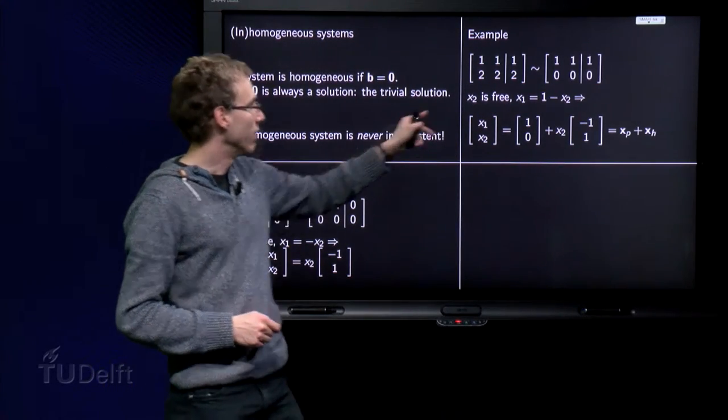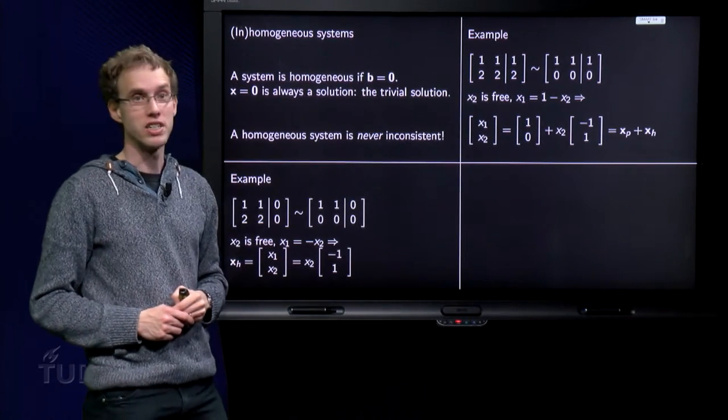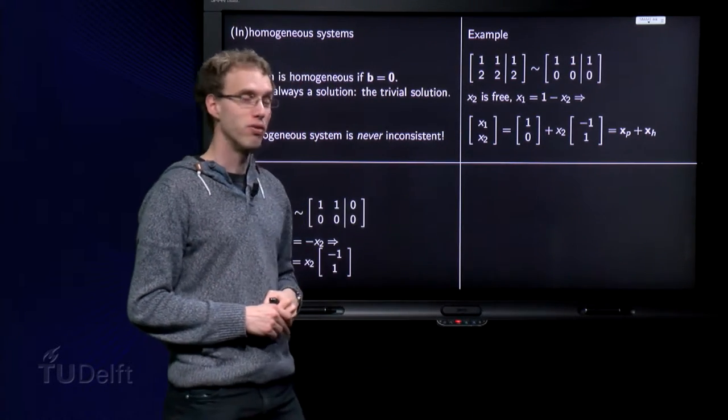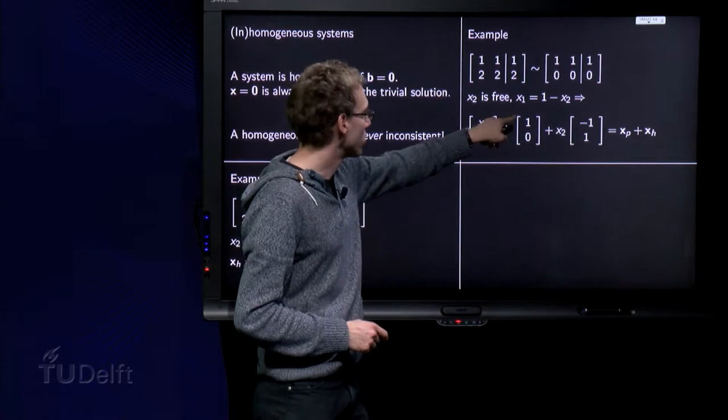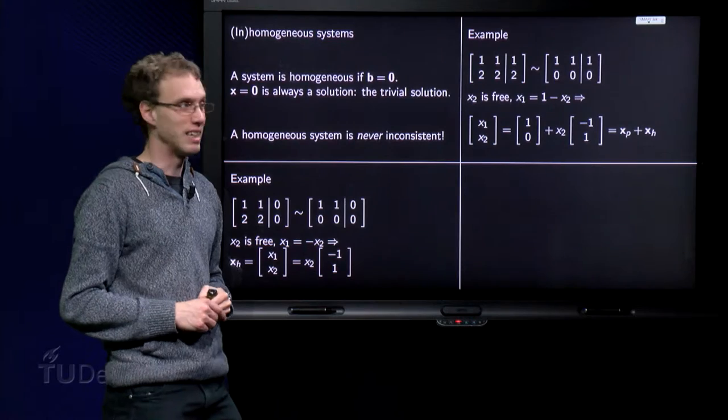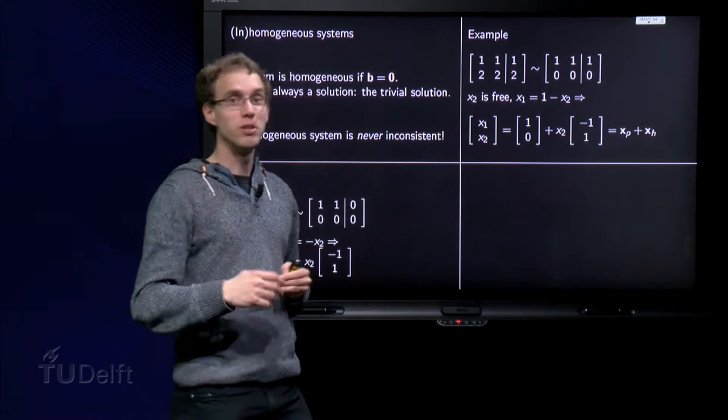And again, we can choose x2 as free. And now we have x1 equals 1 minus x2. And when we write down the parametric vector form, we get x1, x2 equals 1 minus x2, x2.